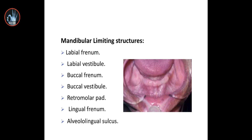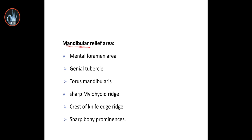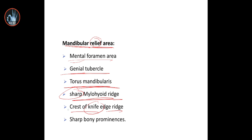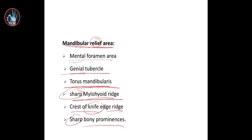In the next lecture we will talk about the limiting structures: labial frenum, labial vestibule, buccal frenum, buccal vestibule, retromolar pad, lingual frenum, and the alveolingual sulcus. After that, we will talk about the relieving area: mental foramen area, genial tubercle, torus mandibularis, sharp mylohyoid ridge, crest of knife edge, and sharp bony prominence. For today, we focus on the mandibular supporting structures.